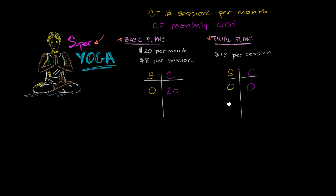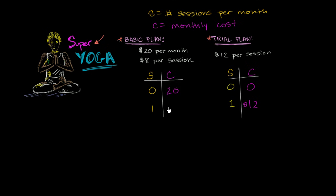Let's think about the scenario where I attend one session. Under the trial plan, it's $12 per session times one session — I'm going to pay $12. Under the basic plan, if I attend one session, it's $8 per session times one session, that's $8, plus the $20 basic monthly fee. So I'm going to have to pay $20 plus 8 times 1, which is $28. The trial plan still looks pretty good even if I attend one session.